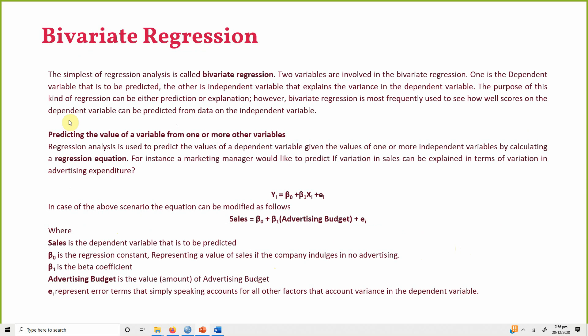Bivariate regression involves one dependent and one independent variable — only two variables. The independent variable explains the variance or change in the dependent variable. The purpose of this kind of regression can either be prediction or explanation.